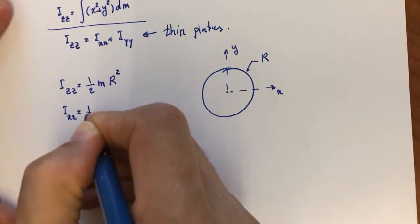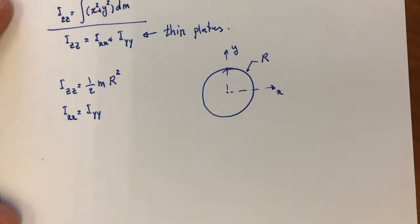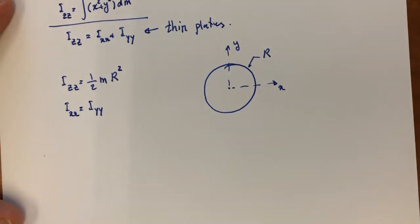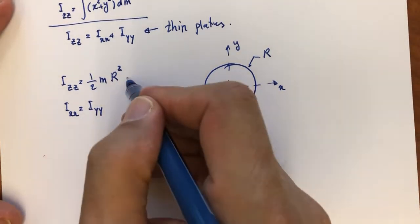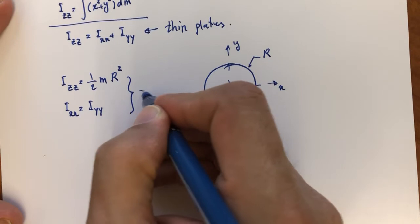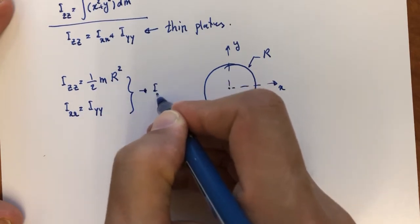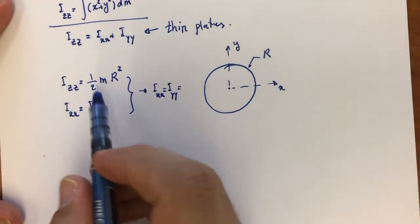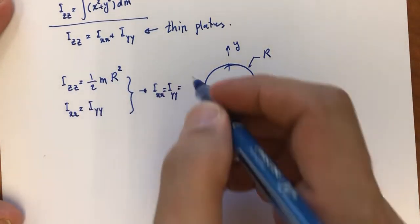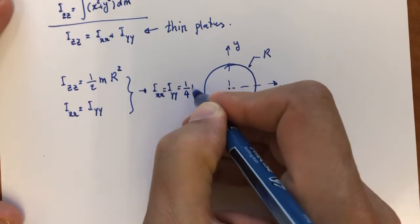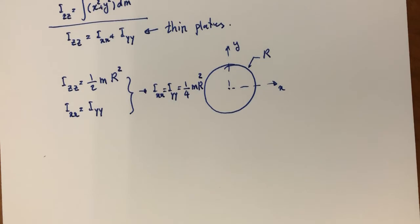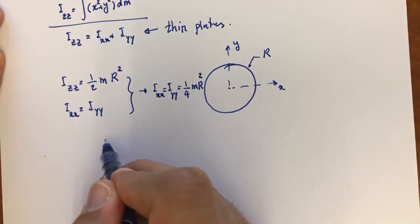So I_xx equals I_yy. We also know that I_zz equals I_xx plus I_yy. From these two facts, we can conclude that I_xx equals I_yy equals one-half of I_zz, which gives us one-quarter times mass times r squared. That is an important result for a thin disk.